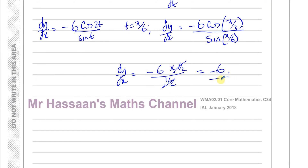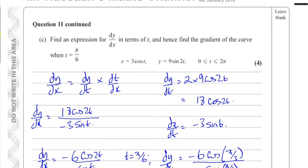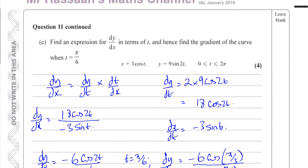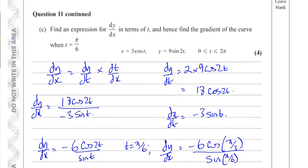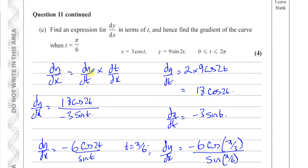That's part (c) done. We found the gradient by finding dy/dx using the chain rule: dy/dt times dt/dx. We find dy/dt and dx/dt separately, then dy/dx is dy/dt divided by dx/dt.